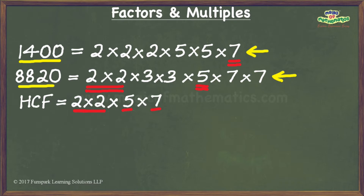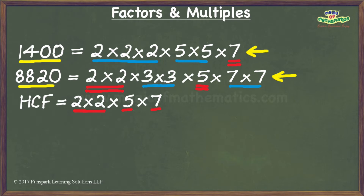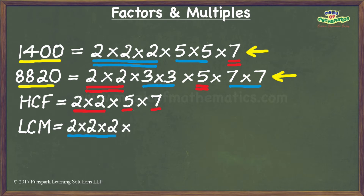Now I will use my two prime factorizations to find the LCM of the given numbers. For finding the LCM I need to do two things: firstly, identify the occurrences of each prime factor from the prime factorization where it occurs the most number of times, and secondly, multiply the occurrences so identified. The prime factor 2 occurs most in the first factorization, so I underline those. By similar logic I underline 3, 5, and 7 where they occur most. Multiplying these gives the LCM as 2 times 2 times 2 times 2 times 2 times 3 times 3 times 3 times 5 times 5 times 7 times 7.